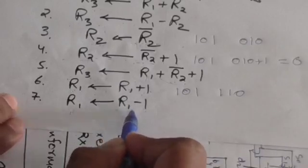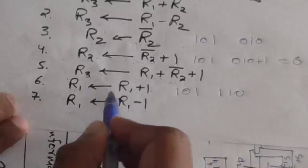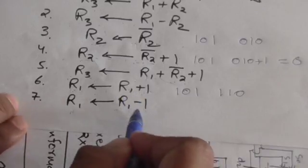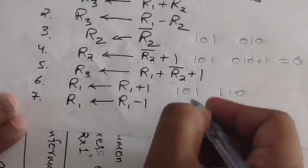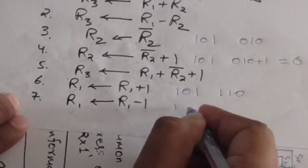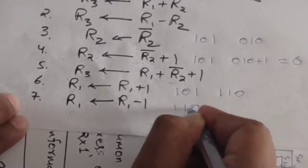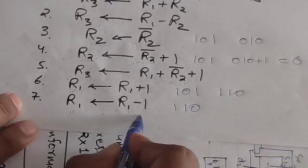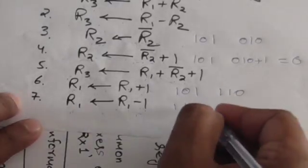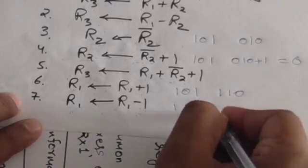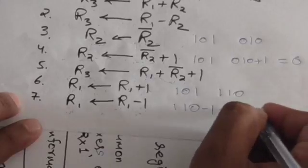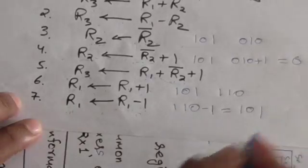The next statement represents a decrement micro operation. In this micro operation, whatever is the content of register R1 is decreased by one. For example, if initially the content of register R1 is 110, then after applying this micro operation it will be decreased by one and will become 101.